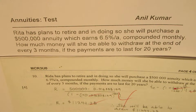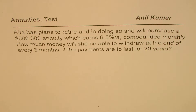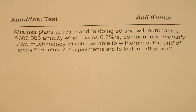I'm Anil Kumar sharing with you a test question on annuities. The question is: Rita has plans to retire and in doing so, she will purchase a $500,000 annuity which earns 6.5% per annum compounded monthly. How much money will she be able to withdraw at the end of every 3 months if the payments are to last for 20 years?